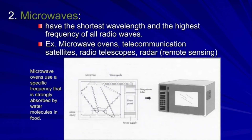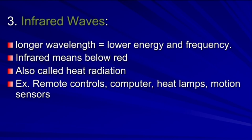Next we have microwaves, which have the shortest wavelength and the highest frequency of all radio waves. Examples include microwave ovens, telecommunication satellites, radio telescopes, radar, and remote sensing. Microwave ovens use a specific frequency that is strongly absorbed by water molecules in food. Next we have infrared waves, which have longer wavelength, lower energy, and frequency. Infrared means 'below red' and is also called heat radiation.